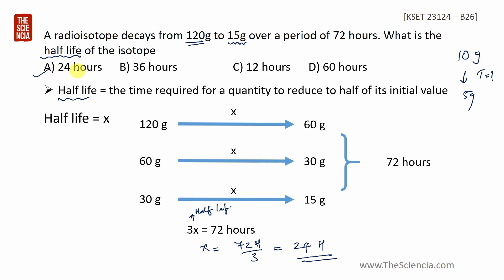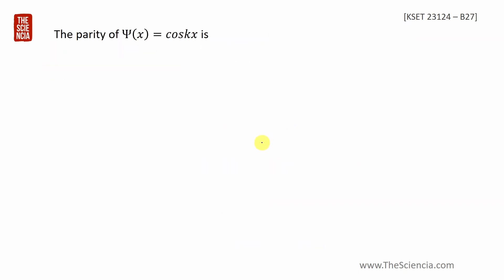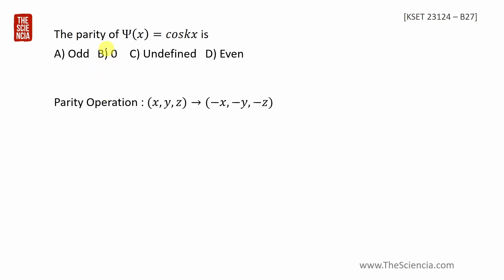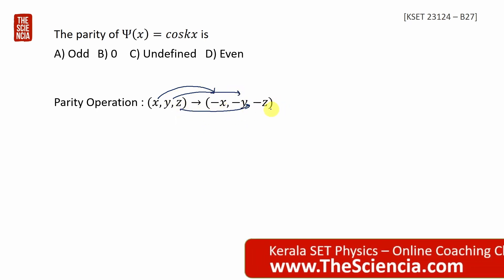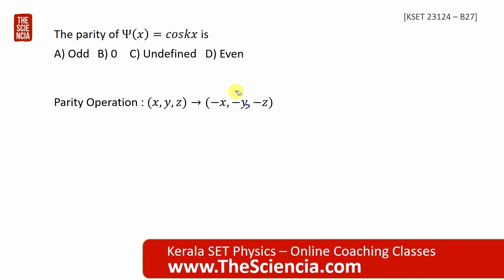Now, the parity of ψ(x) = cos(kx). The options are 1, 0, undefined, or even. The parity operation transforms coordinates (x, y, z) → (−x, −y, −z). So x → −x, y → −y, z → −z. This is the parity operation.